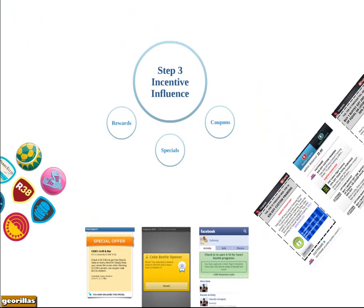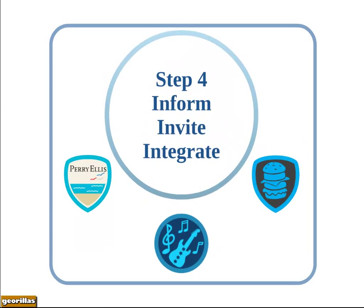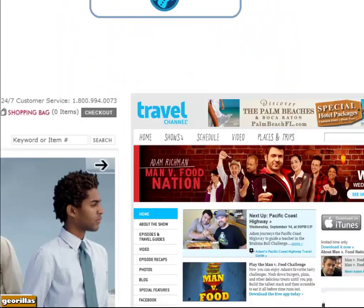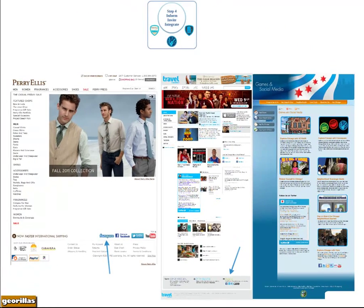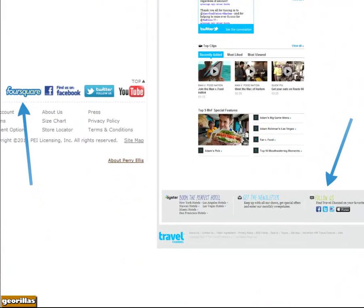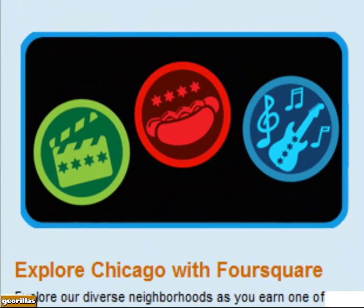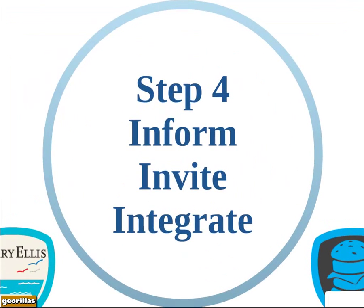Step three is to find incentives to influence customers to choose your place. Step four is to inform and invite your customers. Location-based marketing strategies should be part of the marketing mix, and therefore we need to integrate them with other promotional efforts. Looking at web pages of the same brands and businesses, we can see how they incorporated their LBM strategy and invited their customers to participate. Step four: inform, invite, integrate.